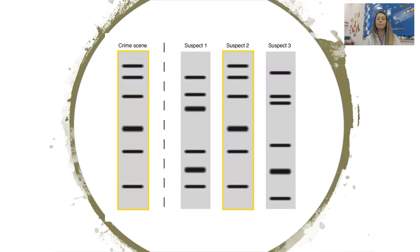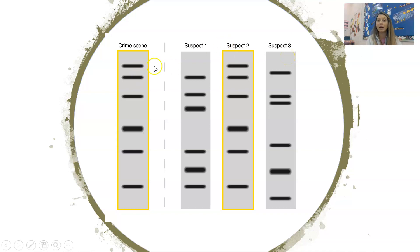Here's an example. We've gotten a DNA sample from a crime scene — maybe there was some blood left there. We run gel electrophoresis on DNA from our three suspects and compare them to the DNA found at the crime scene. Since your bands are specific and unique to you, we can see that suspect two's restriction map — their DNA fingerprint — matches the DNA found at the crime scene.